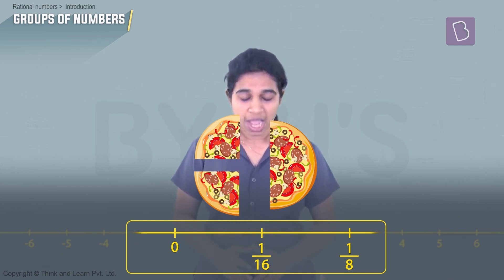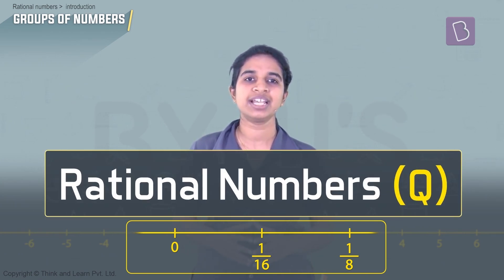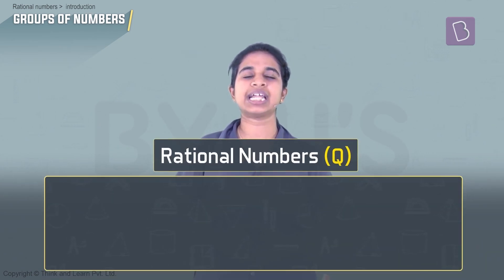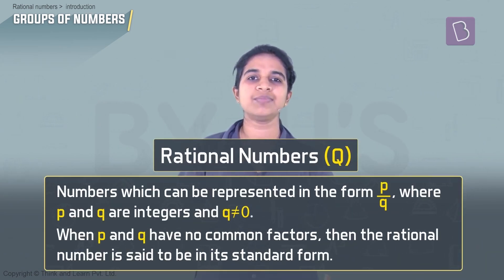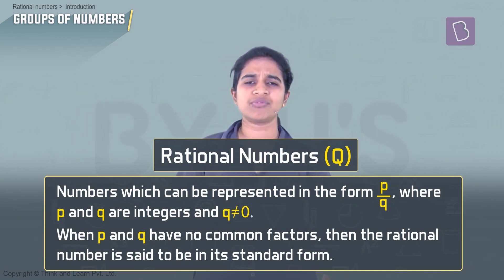This tells us that integers are not enough to represent all possible numbers. Between every two integers there is another infinite set of numbers — we can keep dividing infinitely. These numbers are called rational numbers. The definition: any number that can be represented as p by q, where p and q are integers, q is not zero, and p and q have no common factors.